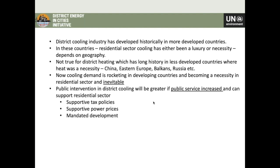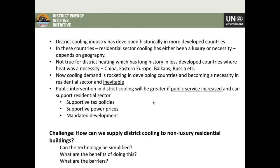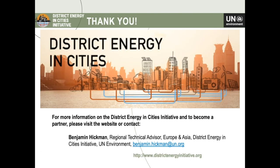If we want to expand district cooling into residential buildings, we will need public intervention — supportive tax policies, supportive power prices, mandated development. To get these policies, we have to show that district cooling can benefit a larger proportion of society and not just shopping malls and ultra-rich people — it can actually impact middle-class people as well. The challenge is: how can we supply district cooling to these buildings? How can we simplify the technology to reduce cost? What are the benefits within the neighbourhood, and what are the actual barriers? With that, I'd like to open it up to our expert panel.